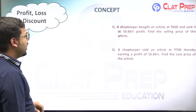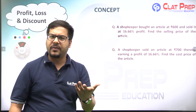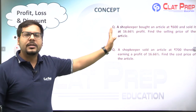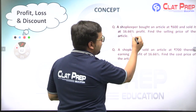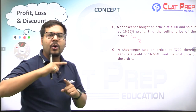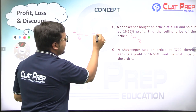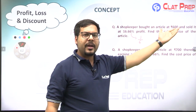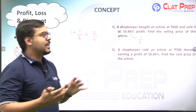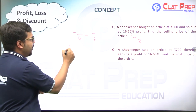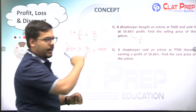Example 1: A shopkeeper bought an article at ₹600 and sold it at 16.66% profit. Find the selling price. Now, 16.66% = 1/6. So the multiplying factor = 1 + 1/6 = 7/6. Selling price = 600 × 7/6 = ₹700. This is much simpler than plugging values into the old formula.